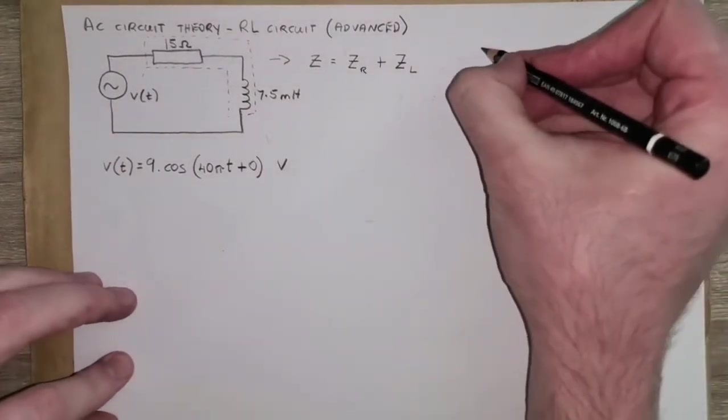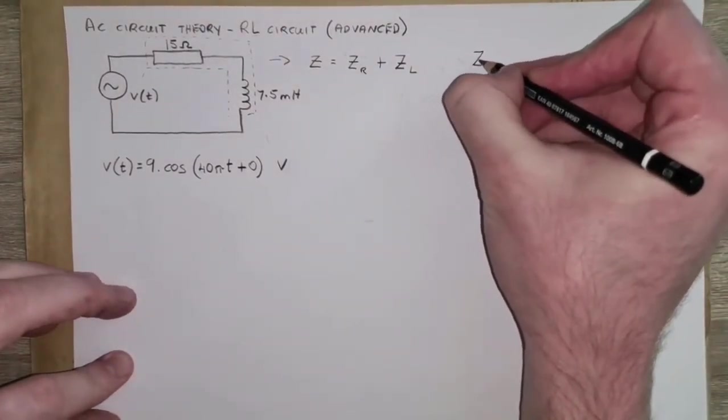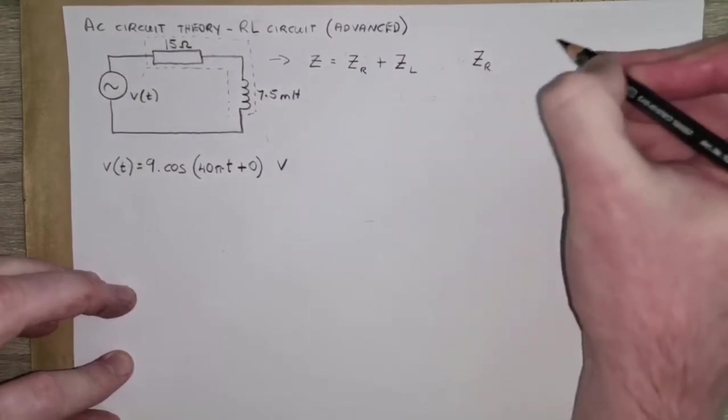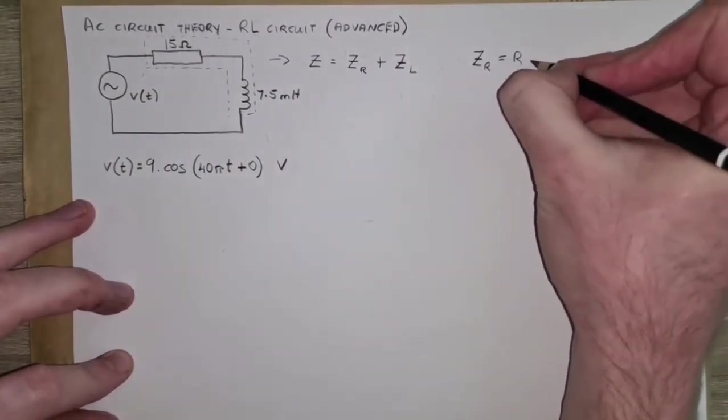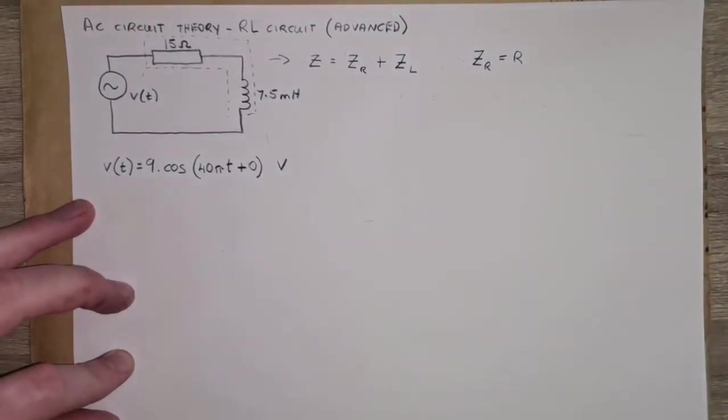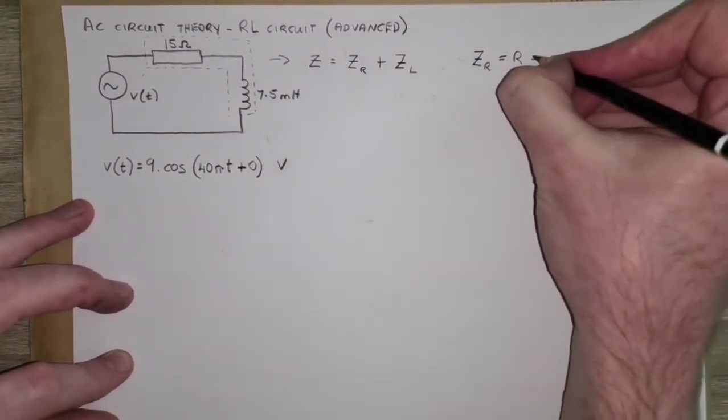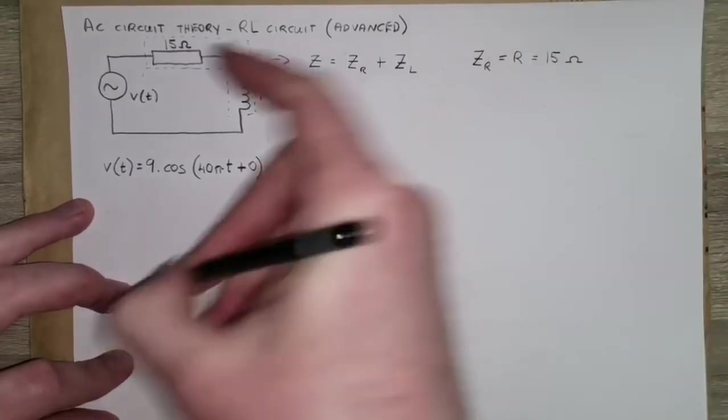And if we recall from that previous question, the impedance of the resistor is just the resistance. So in this case it's 15 ohms because that's given to you in the question.